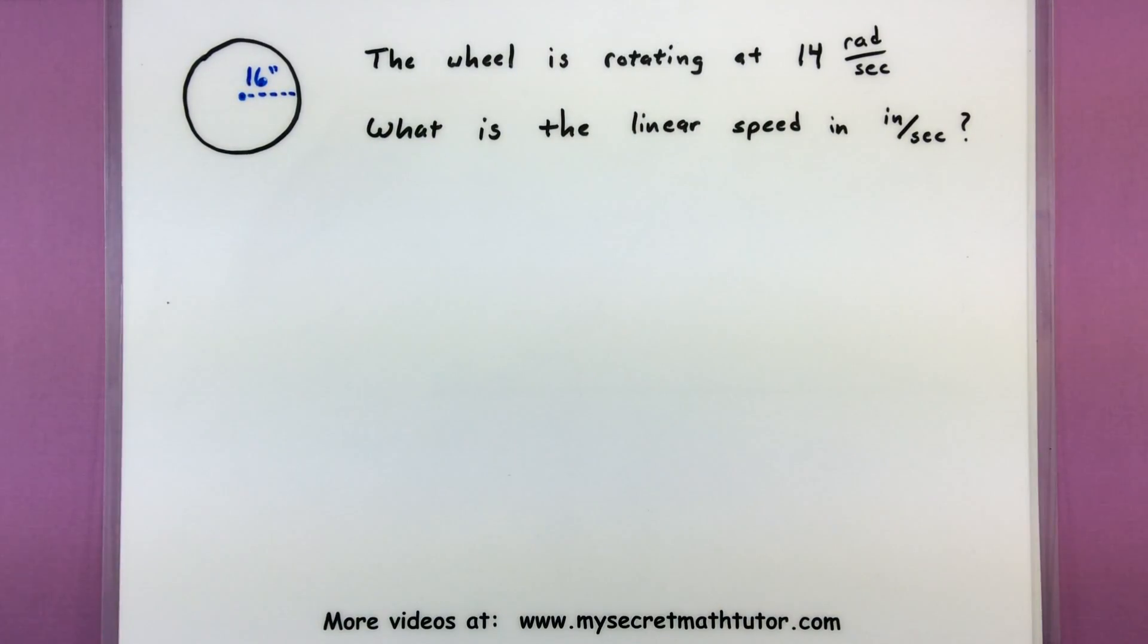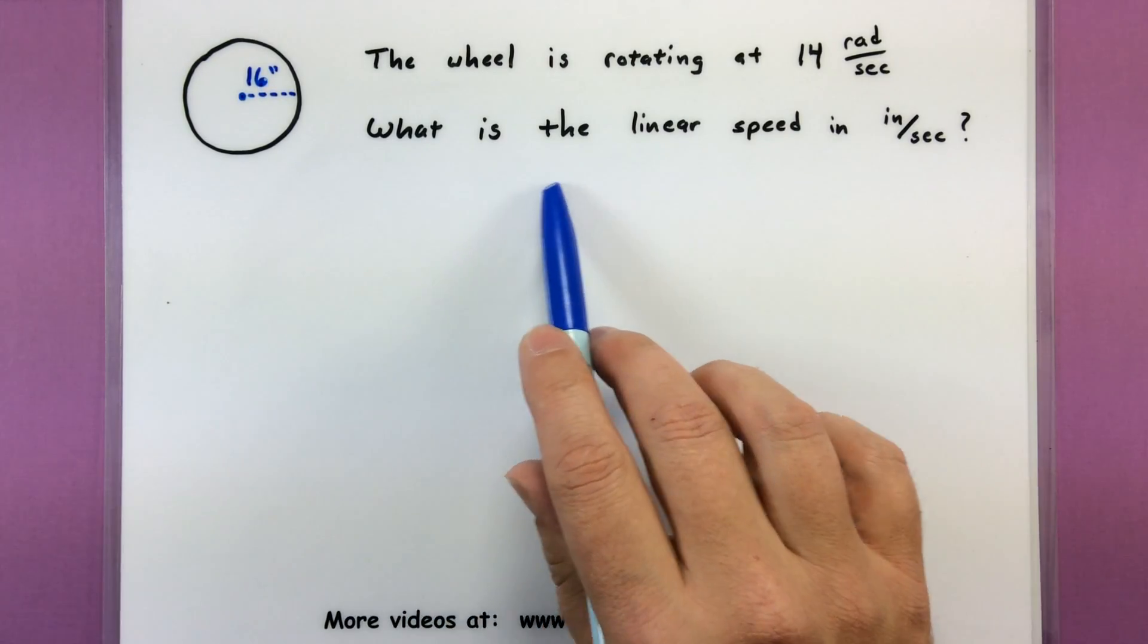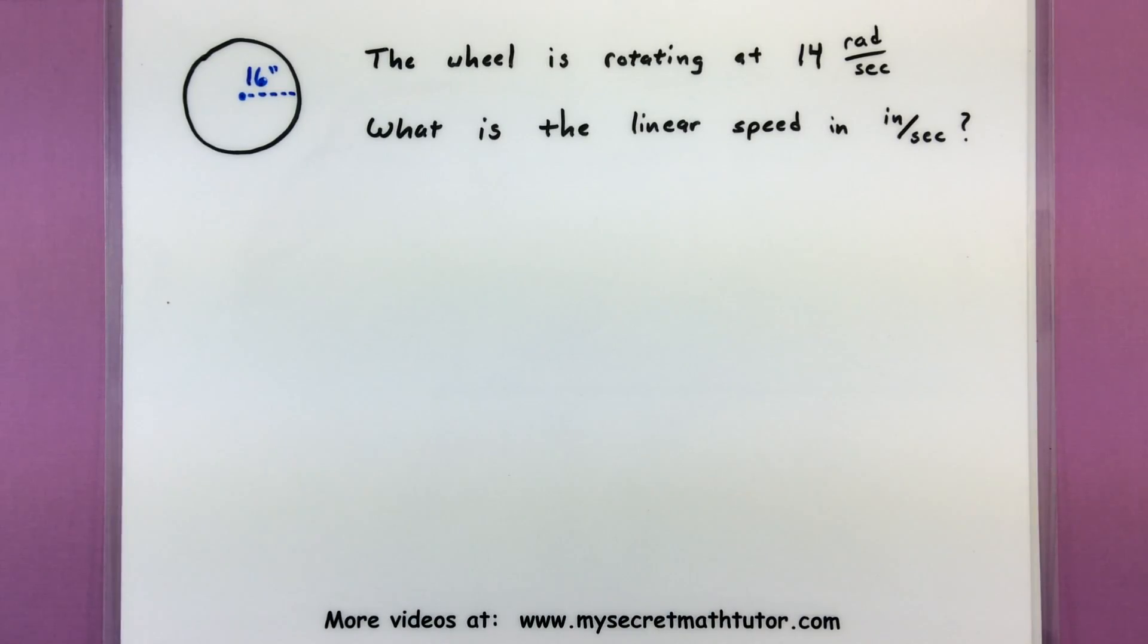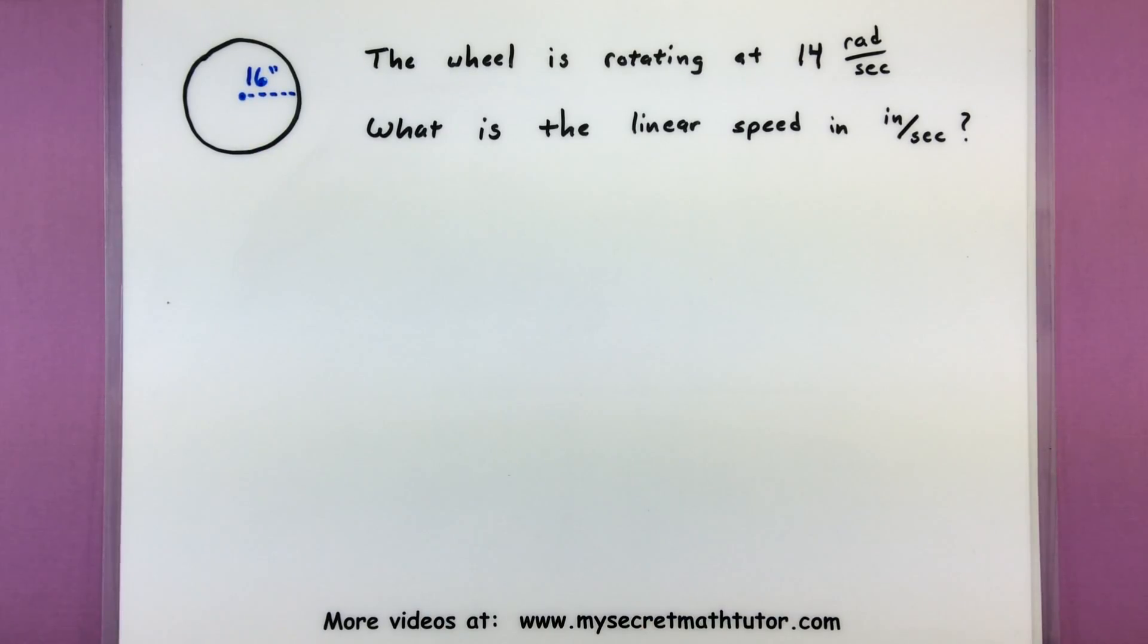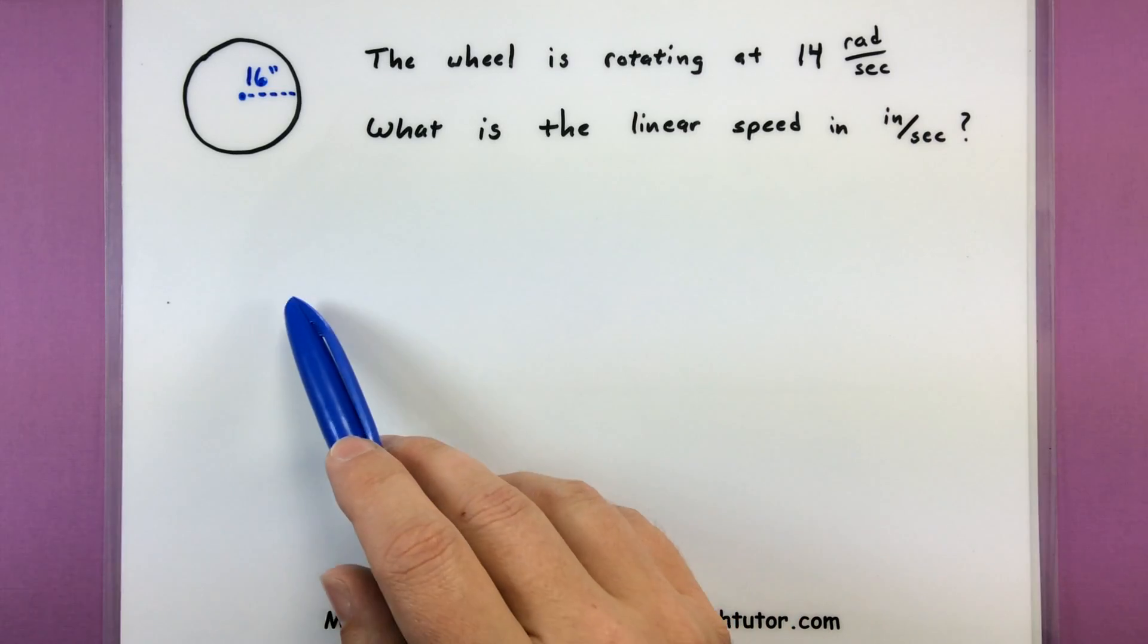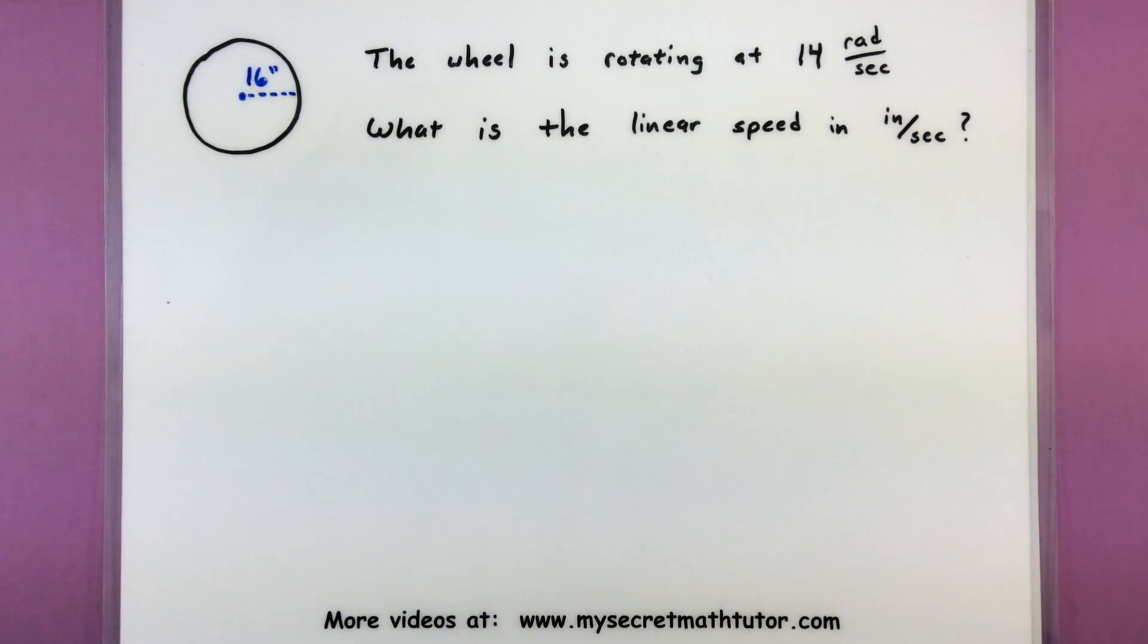So for this first one we have a wheel that is rotating at 14 radians per second and the question is well what is the linear speed in inches per second? So here I have just a nice little diagram of this wheel, we can see that it has a radius of 16 inches, and again this information is telling us more about how many angles it will go through every single second.